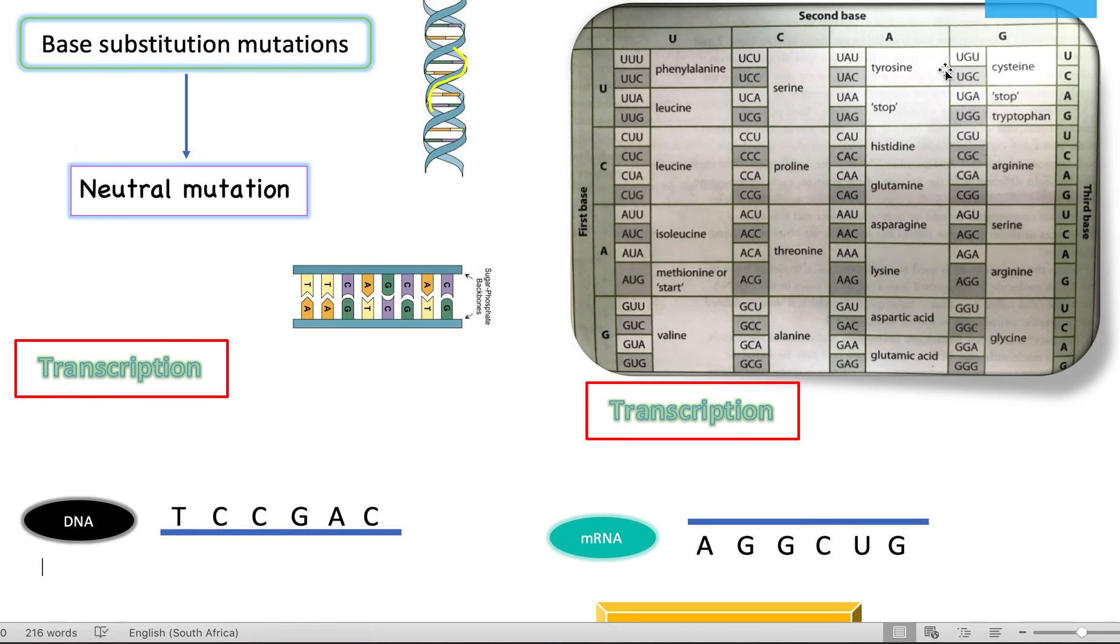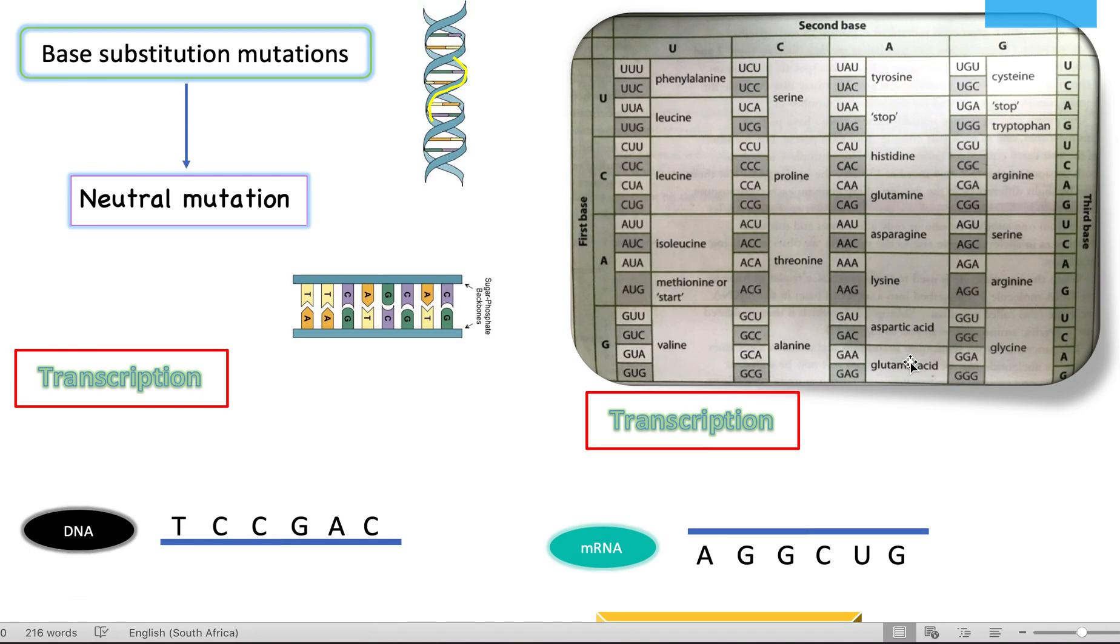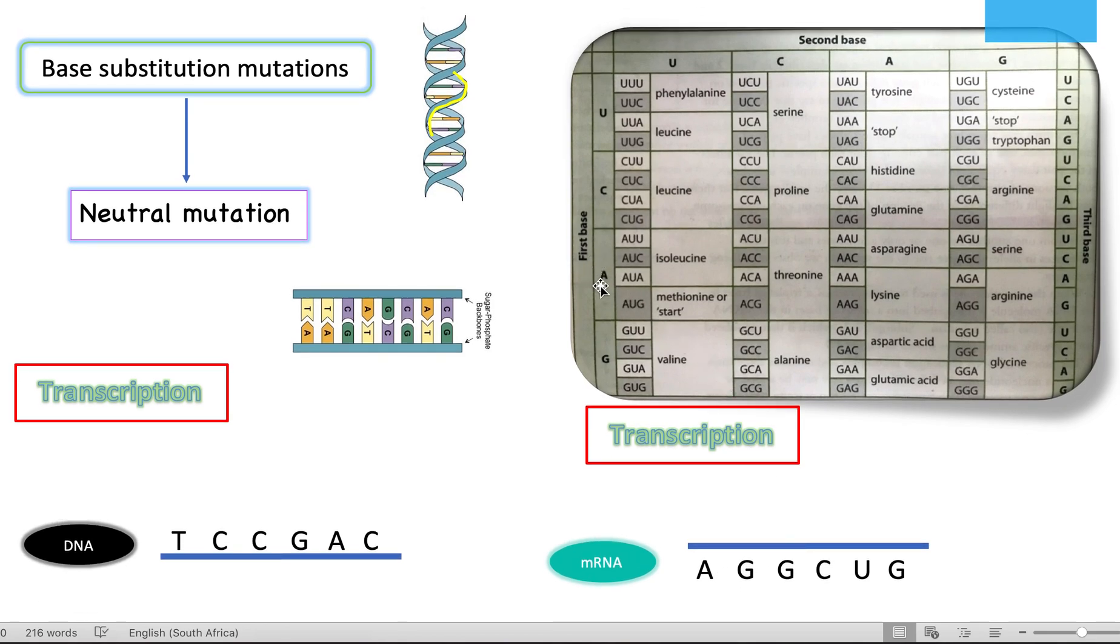This table right here, the purpose of this table is to show which codes mean which amino acid. Right now, our code is asking for AGG amino acid. What we're going to do is we're going to find A, the first base. These are bases—this is base one, base two, three. There are only three bases in a word. So let's look for A, the first base. Here it is.